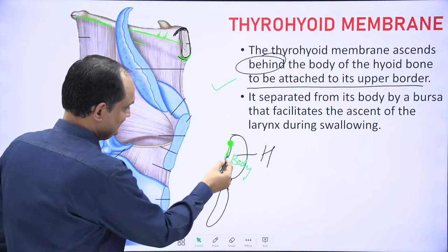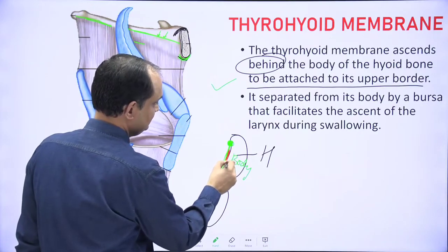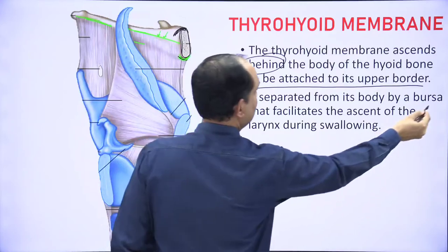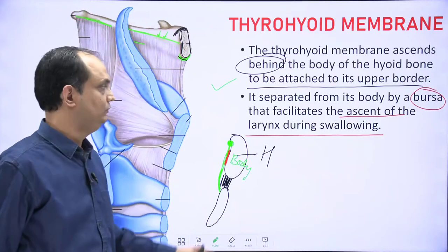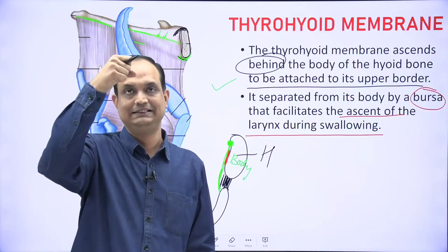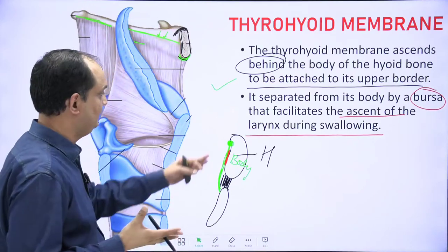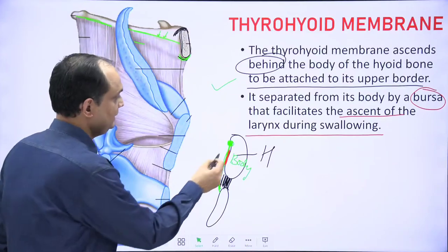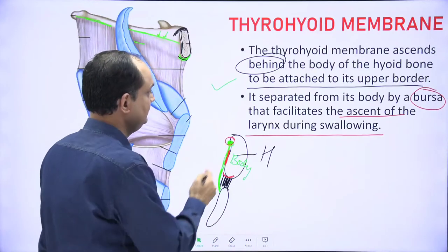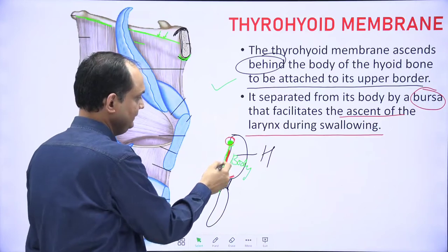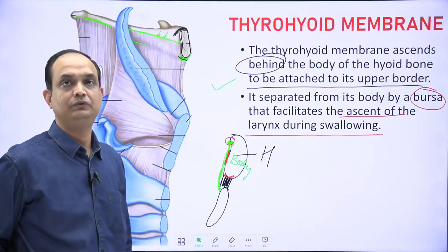The gap or area between the thyrohyoid membrane and the body of the hyoid contains a bursa. This bursa is helpful in the movement of the hyoid bone during swallowing, allowing the larynx to ascend. So the superior attachment is not on the inferior margin of the hyoid bone; it is on the superior margin but on the posterior side, and the gap between the thyrohyoid membrane and the body contains a bursa helpful in movement.